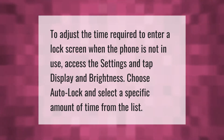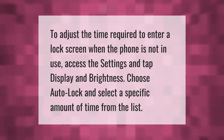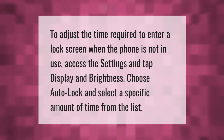To adjust the time required to enter a lock screen when the phone is not in use, access Settings and tap Display and Brightness, choose Auto Lock, and select a specific amount of time from the list.